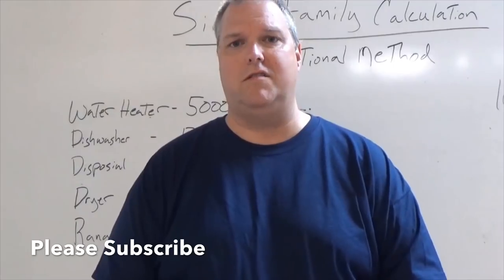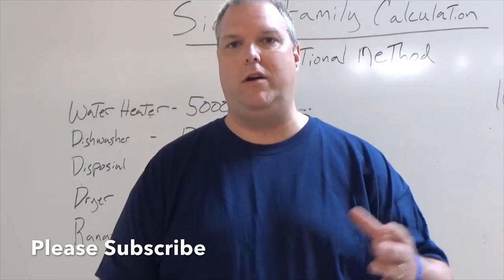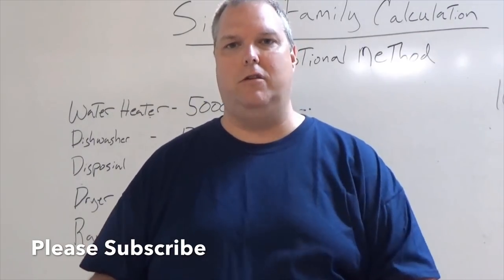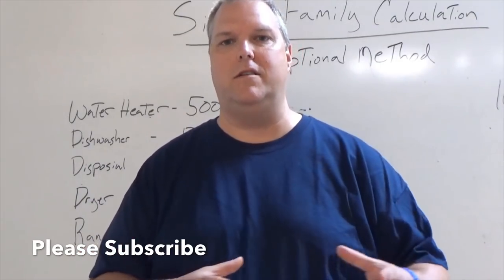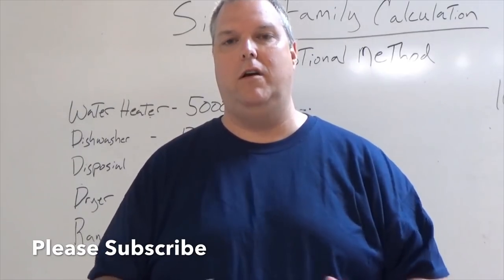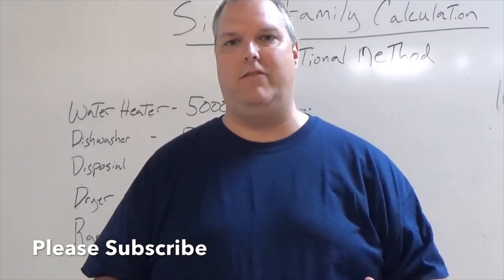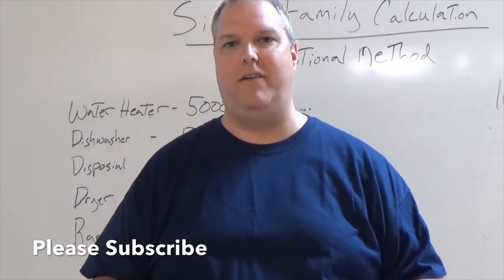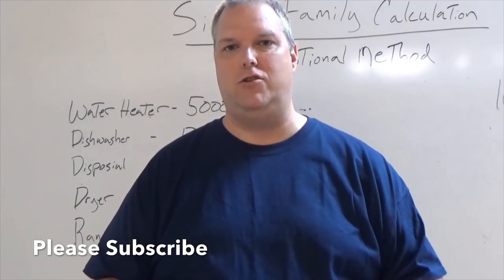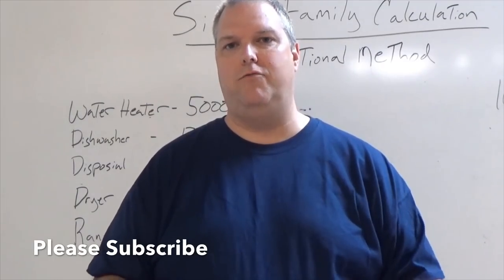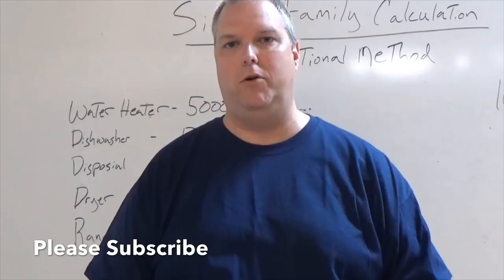In the standard method, after finding general lighting we move to fixed appliances as a separate step. In the optional method, we incorporate fixed appliances directly into the demand load calculation. We don't call it the general lighting load — we're adding everything together and then applying a different demand factor. You'll want to use NEC article 220.82 and follow through subsections B and C, which break down what goes into this part of the calculation.